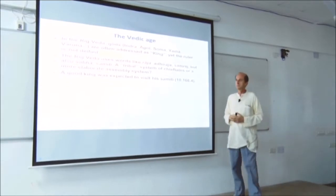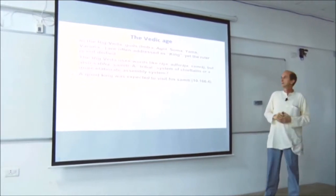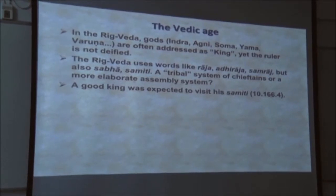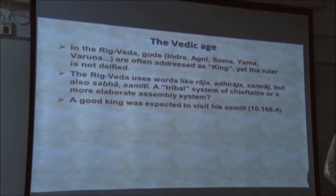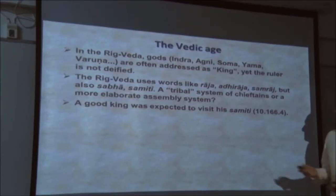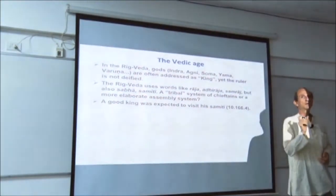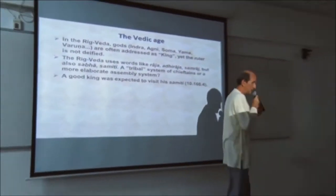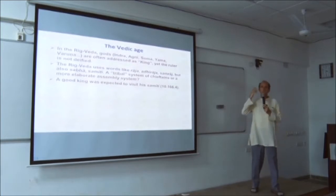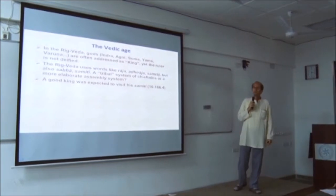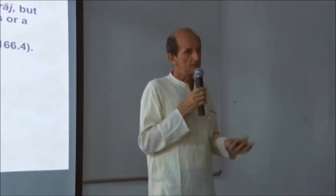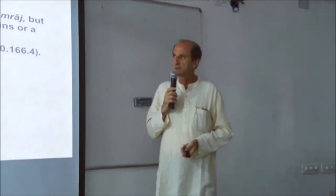Some scholars say the Rig Veda represents a tribal society, though there is a lot of evidence against that. The point is: why do they need so many words, especially words like Samaraj, if they are actually in a tribal society? Apart from this, there are words like Sabha and Samiti, which seem to refer to social organization — a fairly elaborate system. Was it a tribal system of chieftains, or something considerably more elaborate?